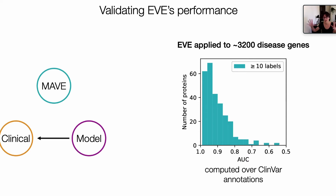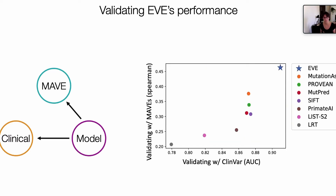Of course, the clinical annotations are just not entirely true, as Claire also mentioned yesterday. You might also be wondering that maybe there's some circularity in this validation because some of these clinical annotations use conservation for being built in the first place. So we can use different orthogonal validation for our models — for example, comparing against MAVEs. Here on the y-axis this is average Spearman correlation against MAVEs done in human genes, and on the x-axis is average AUC on ClinVar annotations, and we see that our model has state-of-the-art performance.